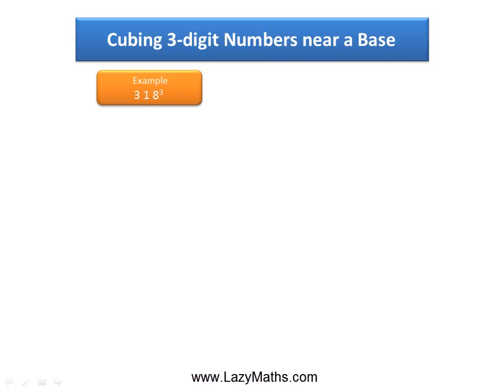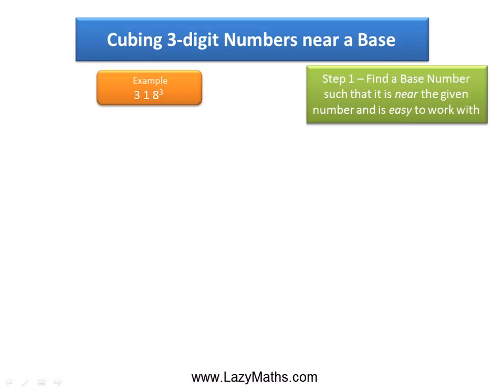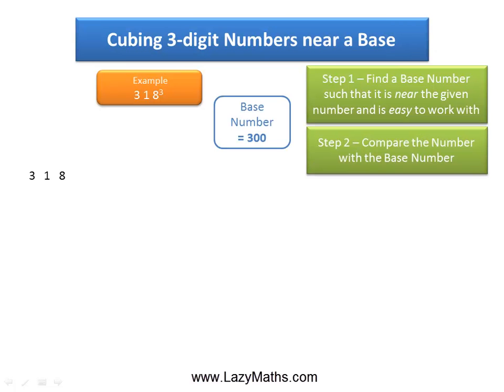Here is an example of cubing a three-digit number near a base: 318 cube. The first step is to find a base number — a number that is near the given number, 318, and is easy to work with. In this case, we can use 300 as the base number. The next step is to compare 318 with 300: 318 minus 300 gives us 18.